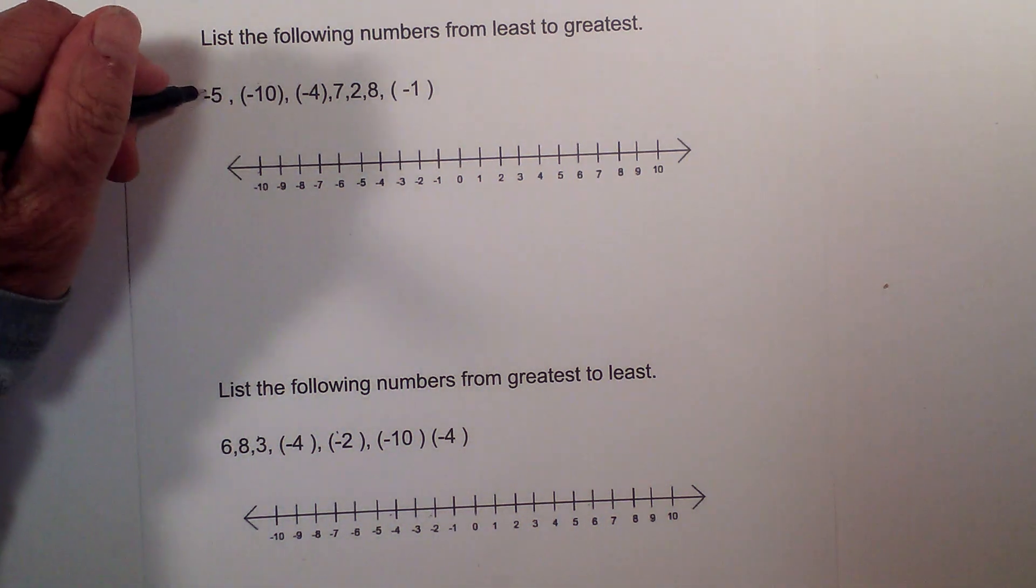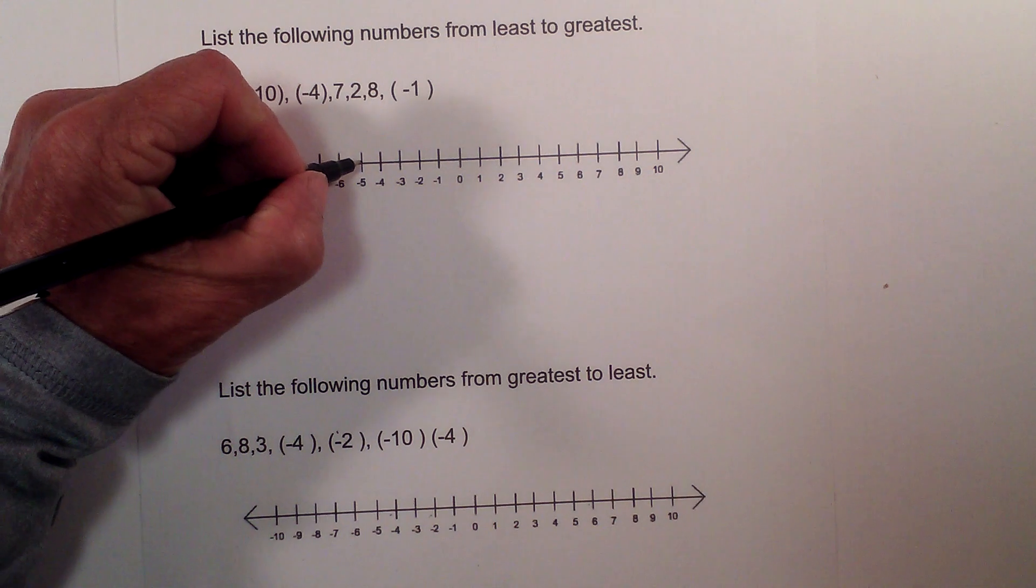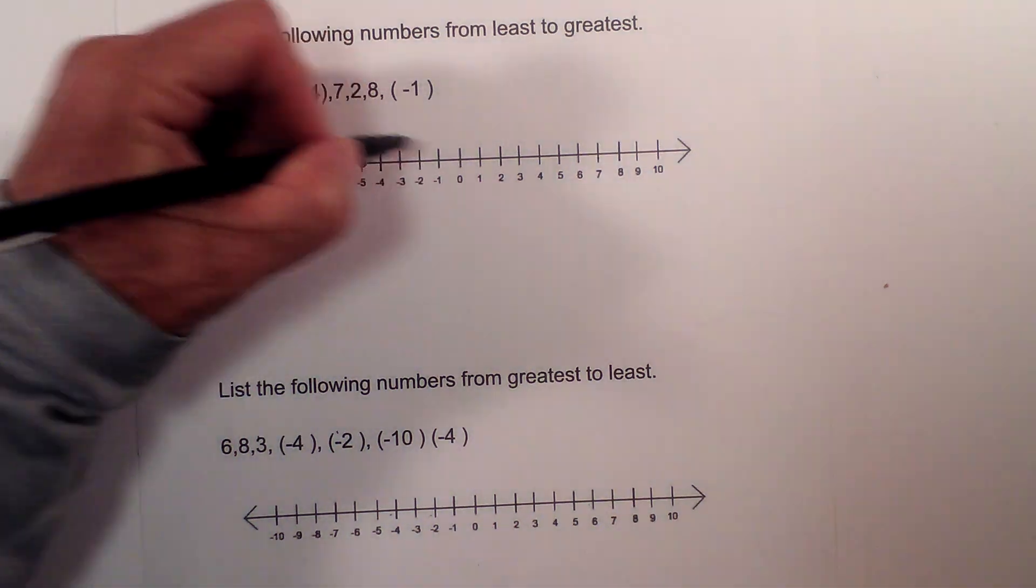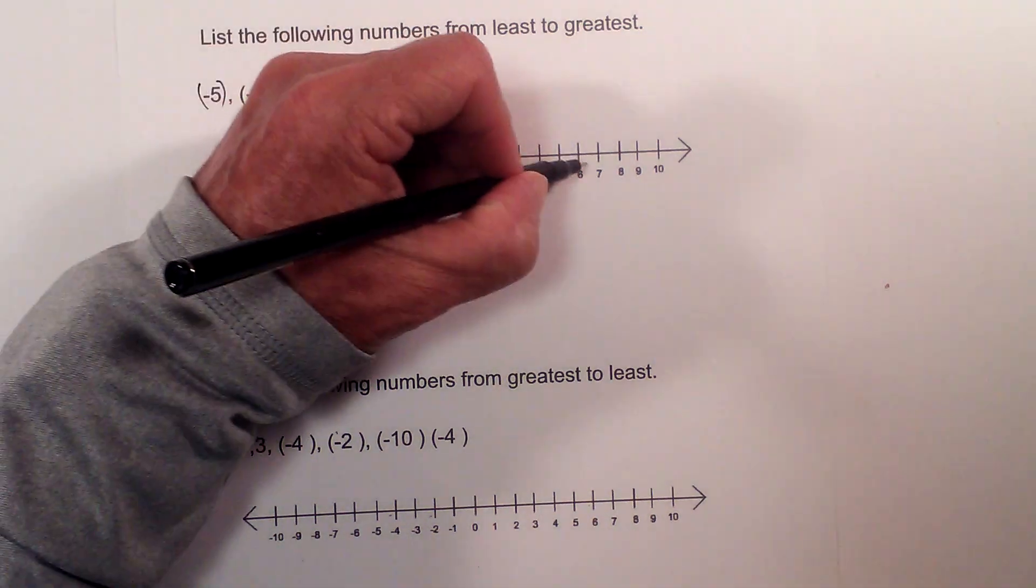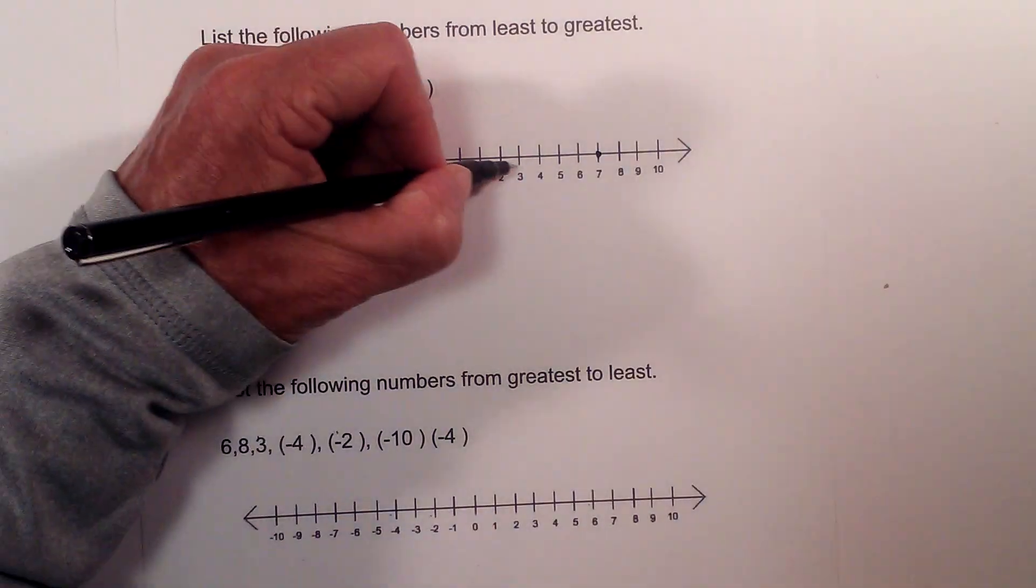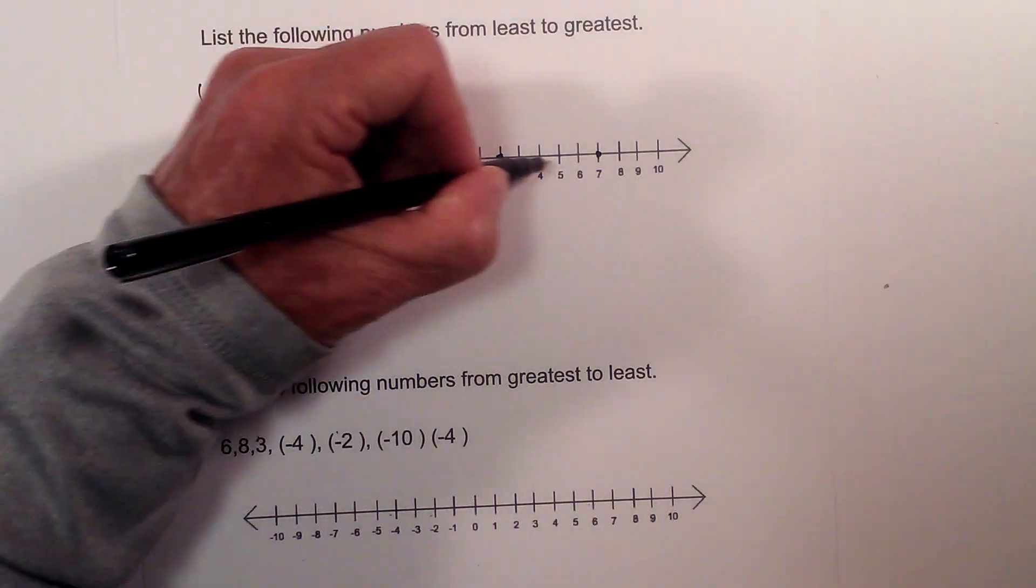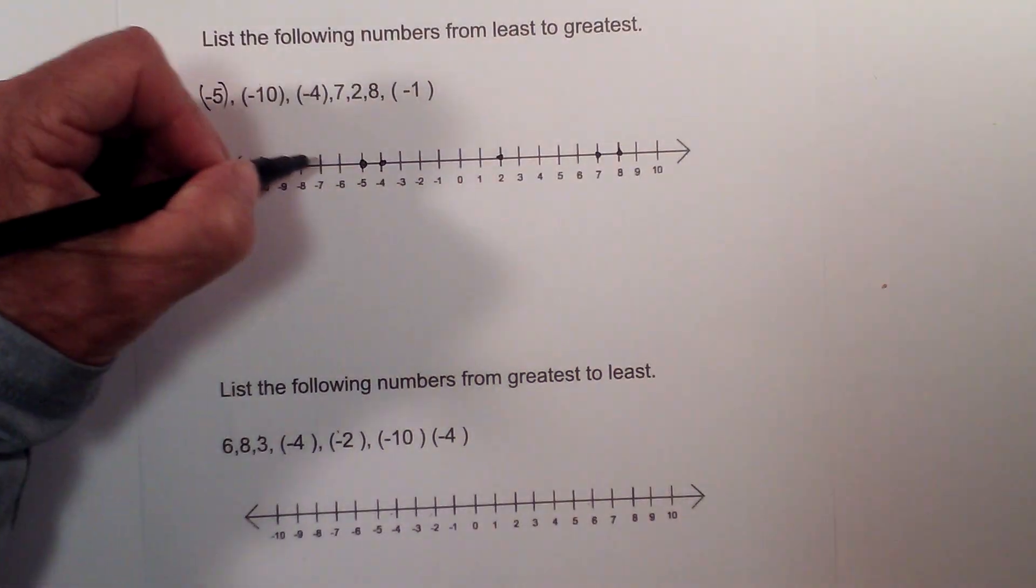So I will graph all of these and this is a negative 5. We have negative 5, negative 10, negative 4, and we have 7, 2, 8, and negative 1.